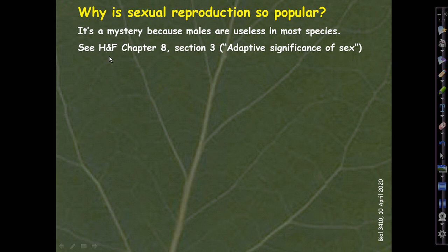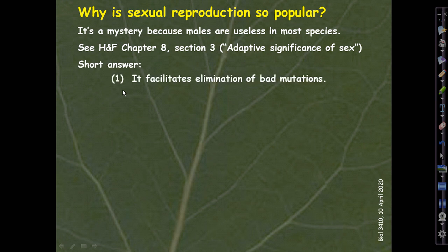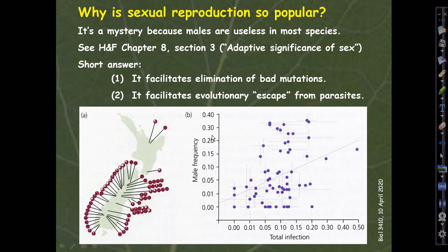In chapter 8, Herron and Freeman discuss this fascinating problem and summarize current thinking and evidence in section 3, called 'The Adaptive Significance of Sex.' We don't have time to cover that material in this version of the course, but you should read it. The short answer is that sex clearly facilitates the elimination of bad mutations. Bad mutations are frequent — there's a constant rain of them — and recombination, which sex allows for, makes dealing with them much more efficient. Sex also facilitates evolutionary escape from fast-evolving parasites.